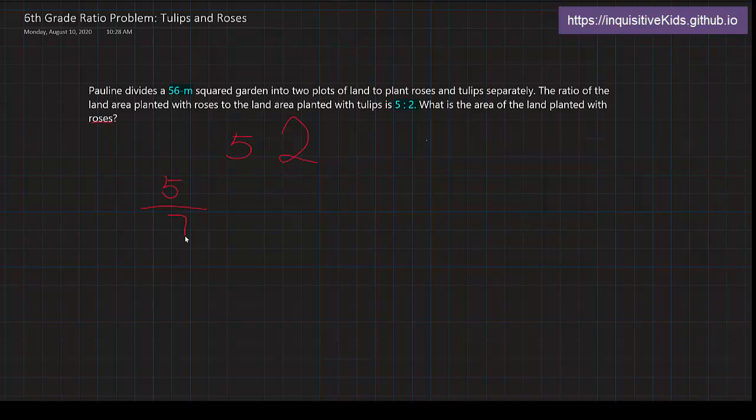But why can we do that? Let's think about what 5 to 2 means. It means that in this 56 meters squared garden, every single group of 7 meters of land is going to have 5 sevenths of it for the roses and the other 2 sevenths for the tulips. This also means that there is a total of 7 units, and this is the 5 unit from the 7 units, because 7 equals 5 plus 2. It's the total number of units here in this ratio.